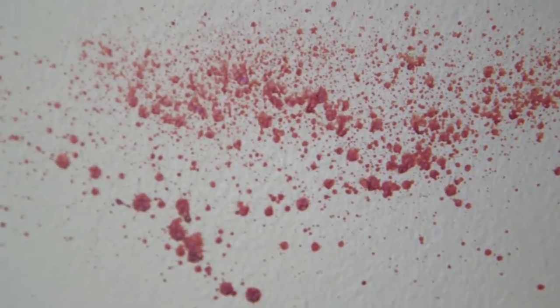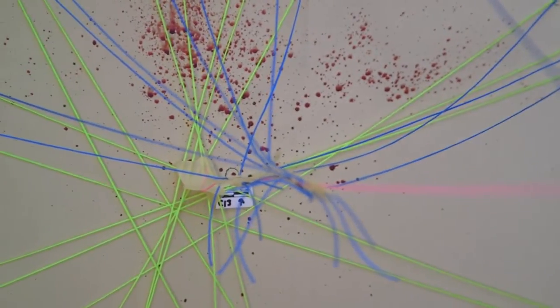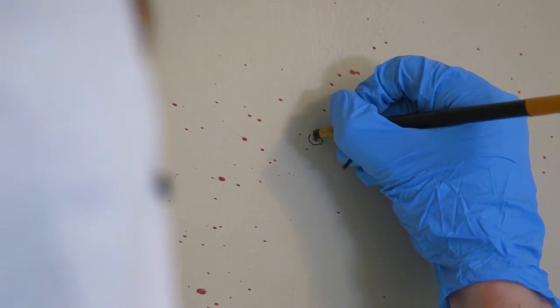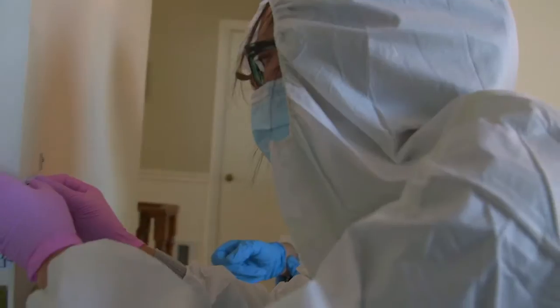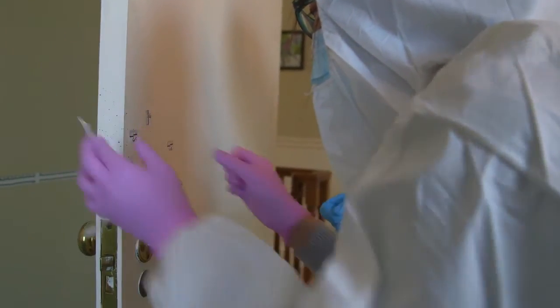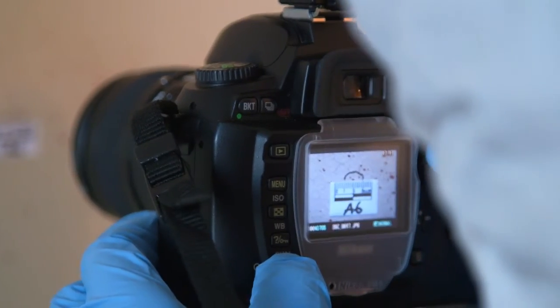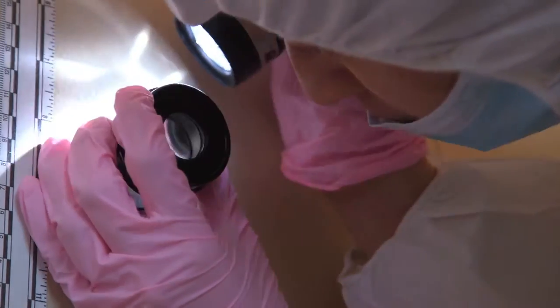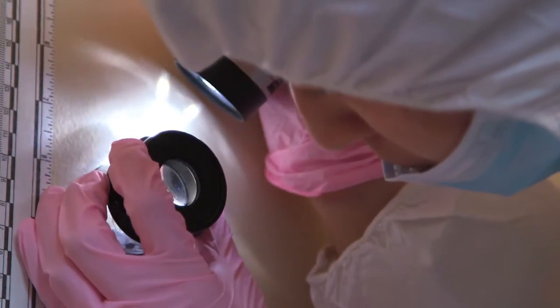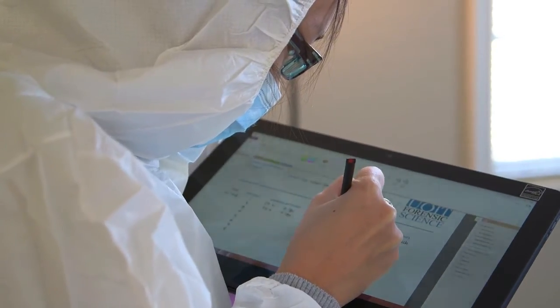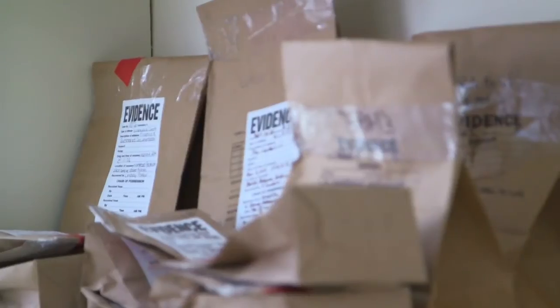During a mock investigation, students analyze blood stains and patterns to determine origin, area of convergence and the sequence of events. By calculating trajectory and angle of impact, students can work backwards to determine the spatter origin. This would help corroborate or refute a victim or witness statement. It may also help investigators determine where a victim or suspect was standing or kneeling, a sequence of events and perhaps what weapon was used during the assault.